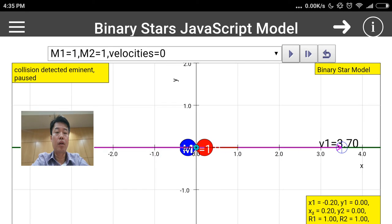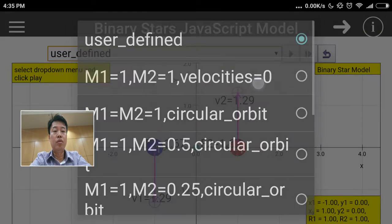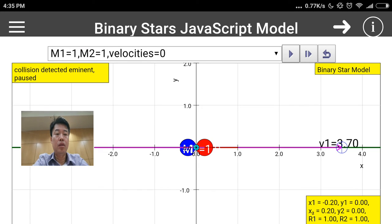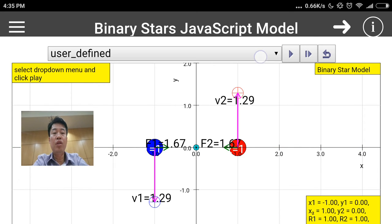This M1 equals one, M2 equals one, velocities equals zero demonstrates the usual gravitational law of attraction where the masses will actually gravitate to each other. What's different about binary stars is they actually could have circular orbits.